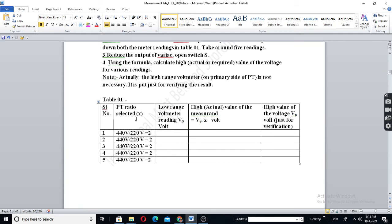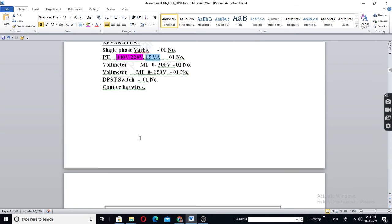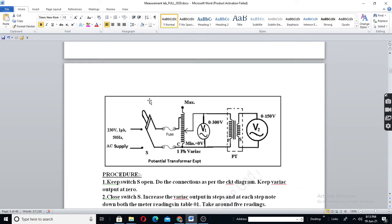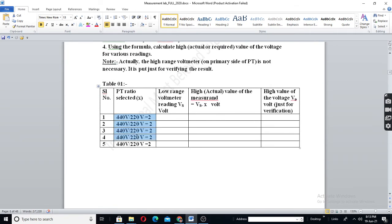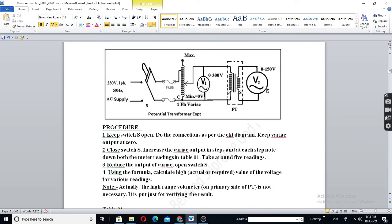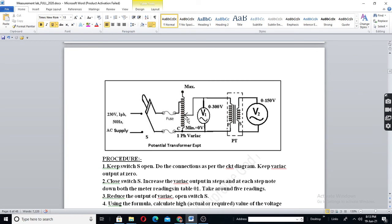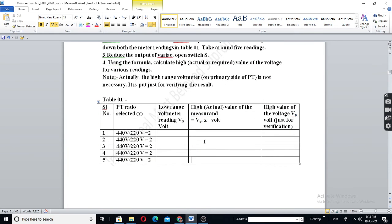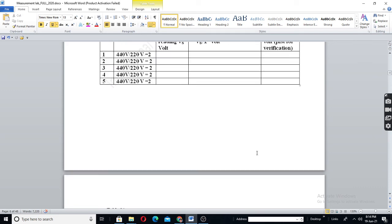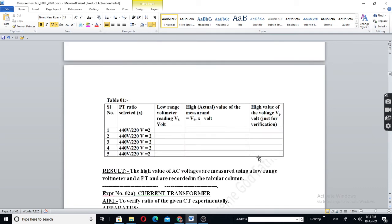The PT ratio is x. X is 2 here. 440 by 220. So, 2. And V2 or Vs, what you measure here, multiply by 2, you will get high value of line voltage. That is the primary voltage. And the secondary voltage is Vs. So, Vs into x will be equal to Vp.